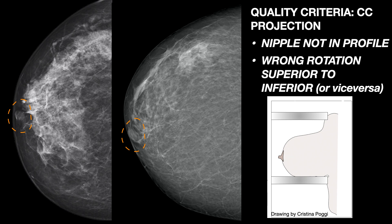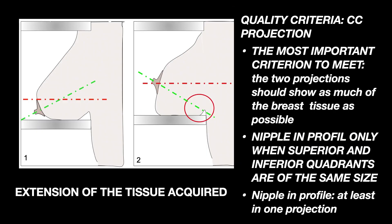A typical example of wrong rotation, this time superior to inferior or vice versa, leads to the condition of the nipple not in profile, in which retroareolar tissue is not worth separating from it. To comply with this criterion, you need to have superior and inferior quadrants parallel to each other and to the detector. The most important criterion remains documentation of the maximum extension of tissue achievable. The nipple-in-profile condition should be complied with only when superior and inferior quadrants are of the same size — with a bigger superior quadrant, having the nipple in profile would mean losing a portion of them. Remember: nipple in profile at least in one projection.